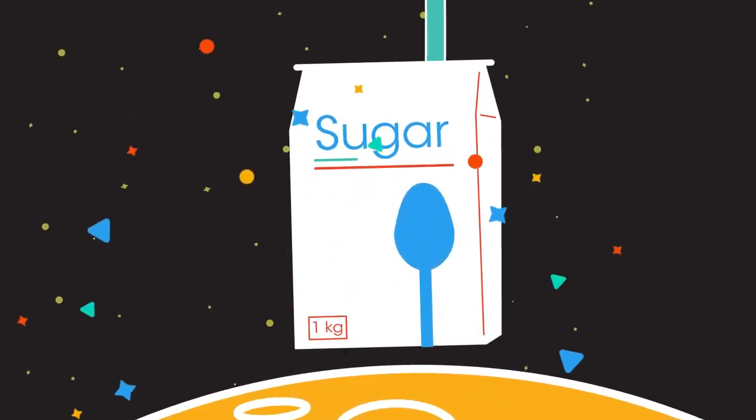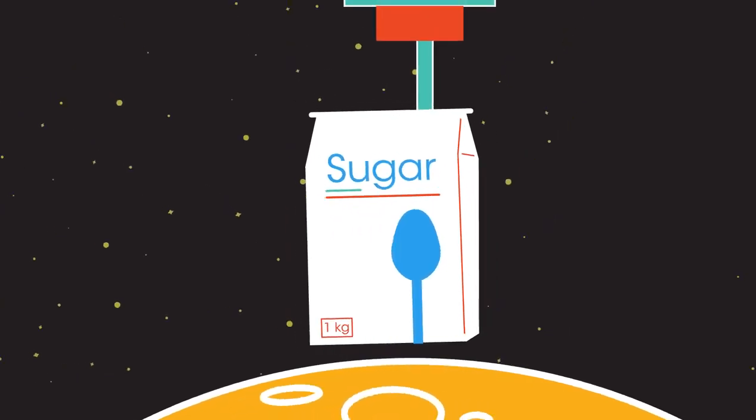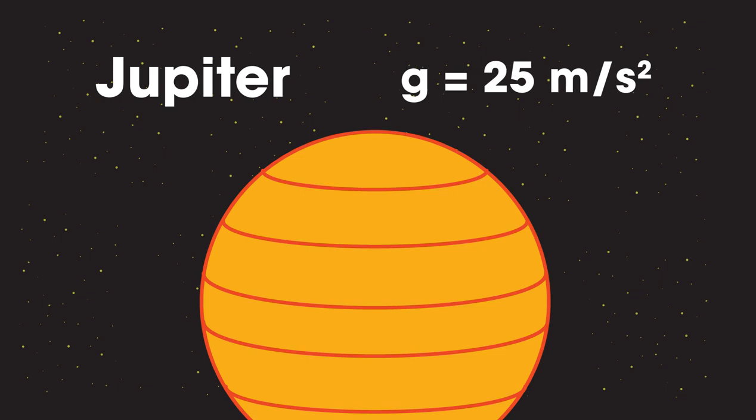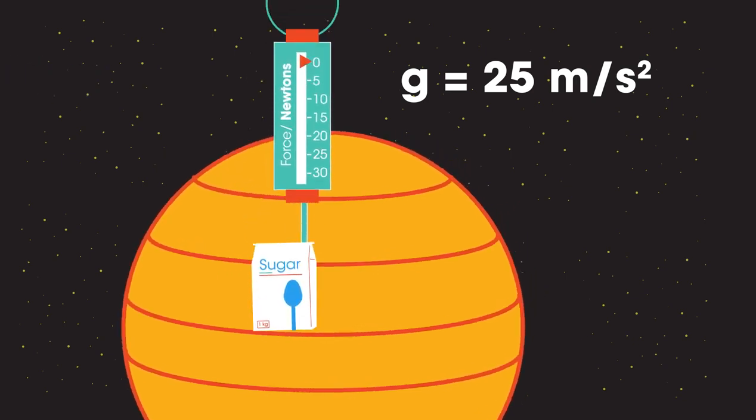Jupiter, the gas giant, has a g value of 25 meters per second per second. Can you work out what the force meter would show for the bag of sugar here, assuming there was a solid surface to stand on? The sugar now has a weight of 25 newtons, but don't forget we still have one kilogram of sugar. That hasn't changed.